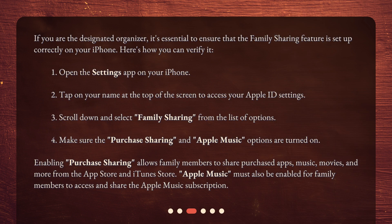If you are the designated organizer, it's essential to ensure that the family sharing feature is set up correctly on your iPhone. Here's how you can verify it: 1. Open the Settings app on your iPhone. 2. Tap on your name at the top of the screen to access your Apple ID settings. 3. Scroll down and select Family Sharing from the list of options. 4. Make sure the Purchase Sharing and Apple Music options are turned on. Enabling Purchase Sharing allows family members to share purchased apps, music, movies, and more from the App Store and iTunes Store. Apple Music must also be enabled for family members to access and share the Apple Music subscription.